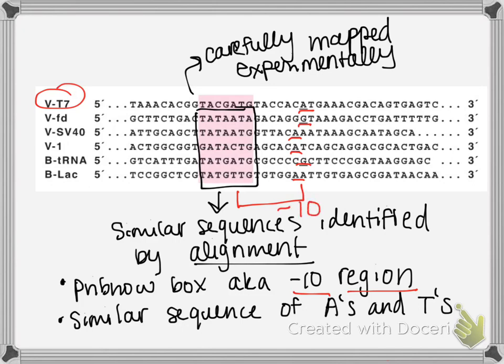The Pribnow box is really high in A's and T's. Now, thinking about the chemical structure of A-T versus G-C base pairs, why would it be more advantageous for RNA polymerase to bind to a region rich in A's and T's?